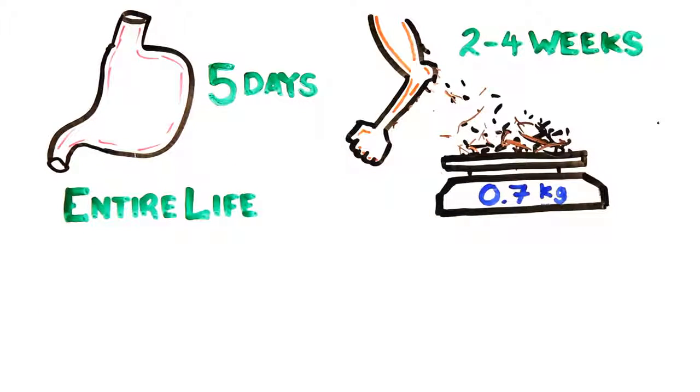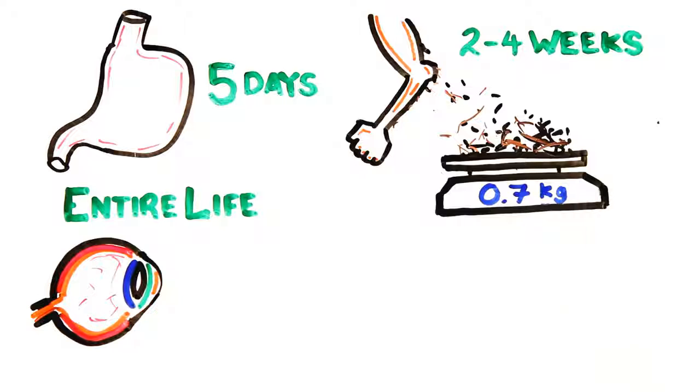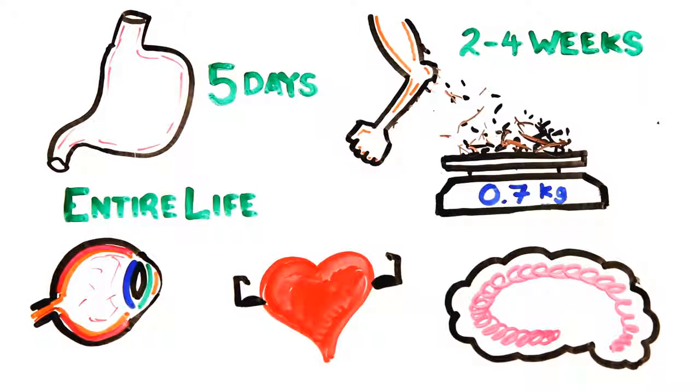Only some cells have been with you your entire life: those of the inner lens of the eye, muscle cells of the heart, and the neurons of the cerebral cortex in your brain, which is largely responsible for your memory.